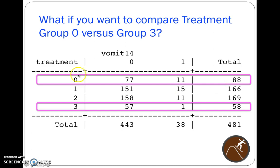Now, say you want to compare treatment group 0, no treatment, versus group 3. Because you think group 3 has got to be different from group 0. I mean, 11 out of 88 vomiting versus 1 out of 58, that's got to be different. How do you do this 2 by 2 table comparison?